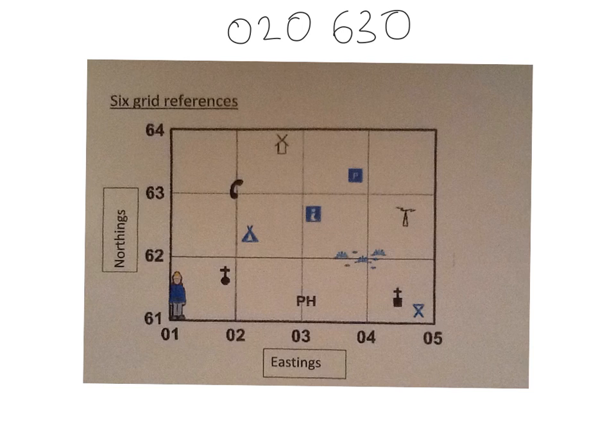Our first clue is grid square 02 which is here. And we're going to count 0 tenths along. So we don't actually have to go anywhere. We're just on the line there: 020. And then we're going to look at grid square 63 which is here. And we only need to go 0 tenths up which is there.